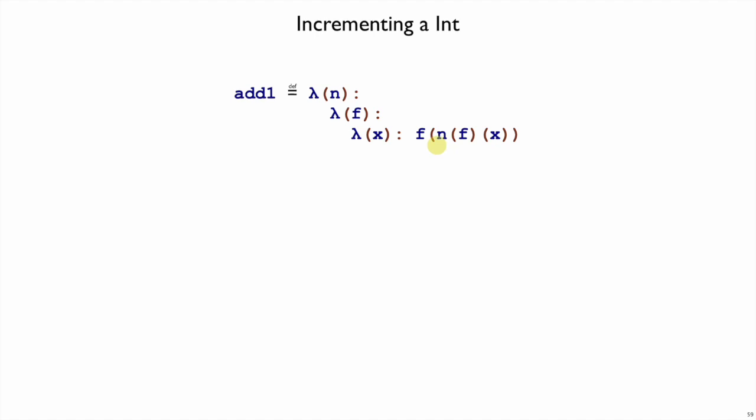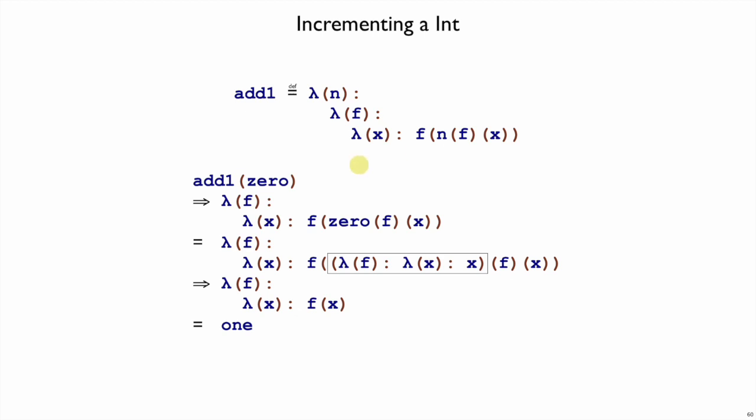We can confirm that this works by trying some examples, like add1 of 0. So if we call add1 of 0, 0 goes in for n here, and so we get lambda f lambda x f of 0 f x, just like I've written here.